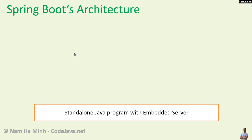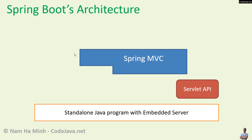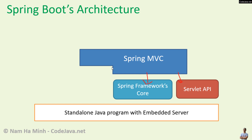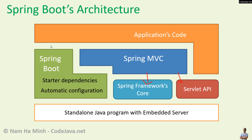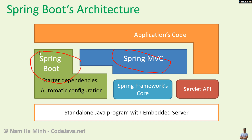Now let's look at the architecture of a typical Spring Boot application. A Spring Boot application is a standalone Java program with an embedded server, which is a Servlet container that provides Java Servlet API. Spring MVC is built on Spring Framework's core and Java Servlet API. We use Spring Boot to simplify development by using features such as starter dependencies and automatic configuration. The application code could be built on Spring Boot, Spring MVC, Java Servlet API, and Spring Framework's core. So you see, Spring MVC and Spring Boot are parts of the application — they work together to make the application function.